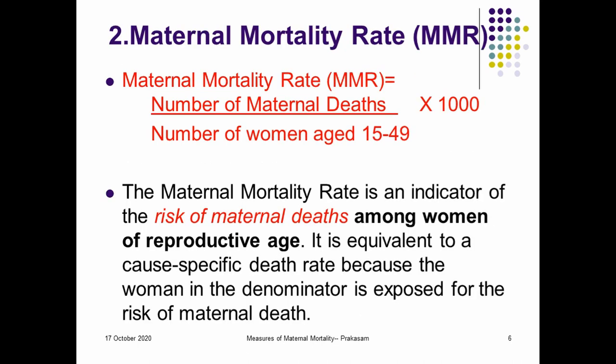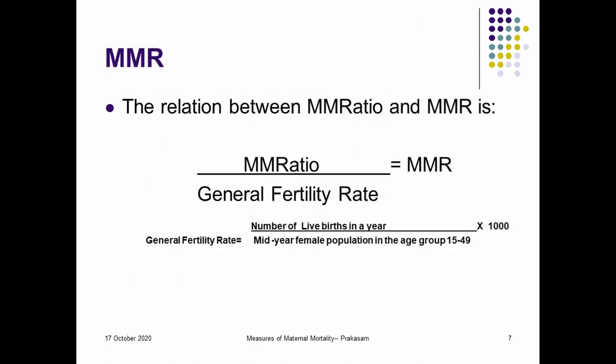The second measurement is the maternal mortality rate. Maternal mortality rate is the number of maternal deaths per number of women in the age group 15 to 49 per thousand. Therefore, maternal mortality rate is an indicator of risk of maternal deaths among women in the reproductive age group 15 to 49. This is also called a cause-specific death rate because women in the denominator belong to reproductive age and are likely to be exposed to maternal deaths.